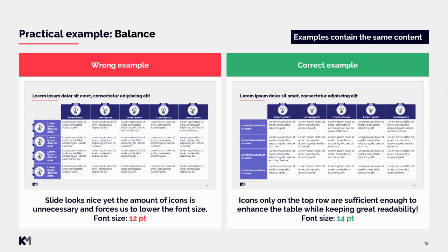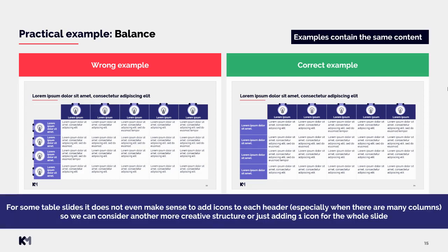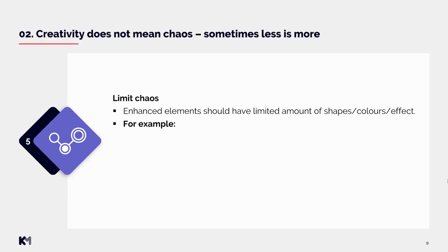We have one more example for table structure. In the wrong example the slide looks nice yet the number of icons is unnecessary and forces us to lower the font size. Instead of putting icons on both the first row and first column, we can put icons only on the top row, which is sufficient to enhance the table while keeping great readability. For some tables it does not even make sense to add icons to each header, especially when there are many columns. A heavy table with too many icons is not a good way to go — try to limit chaos.